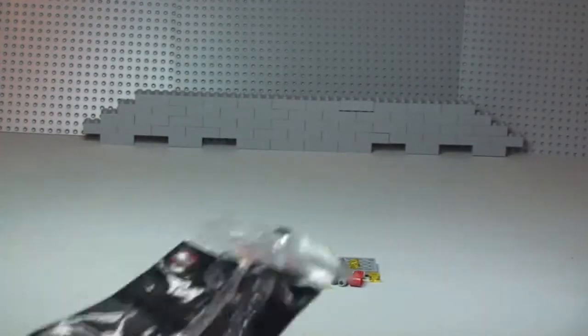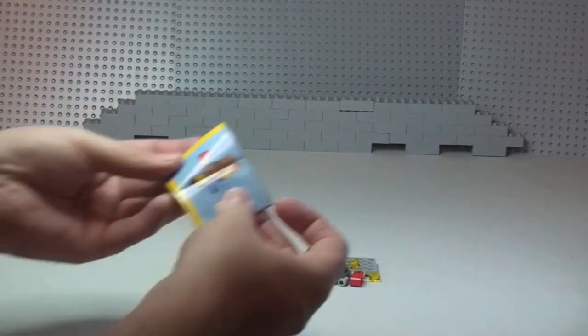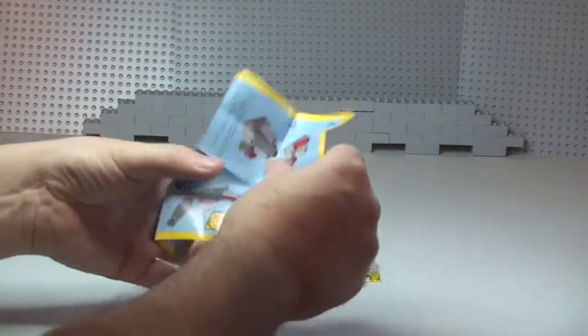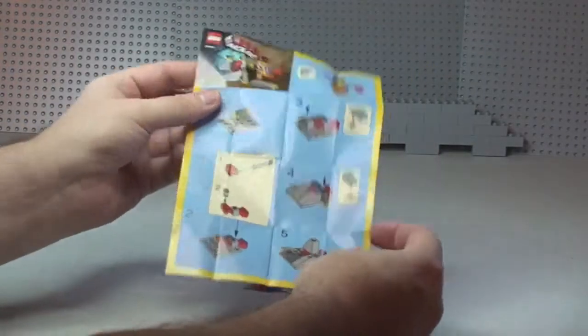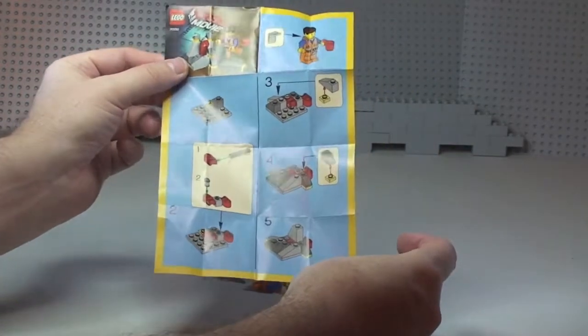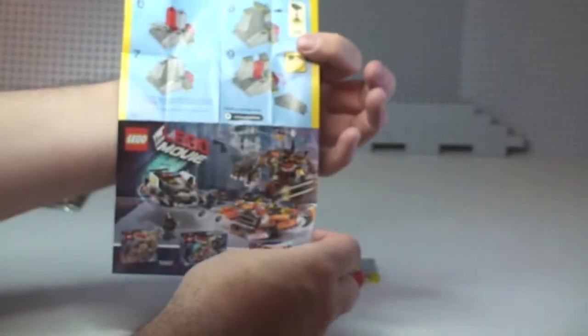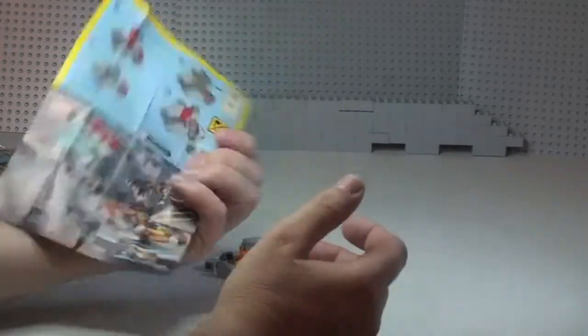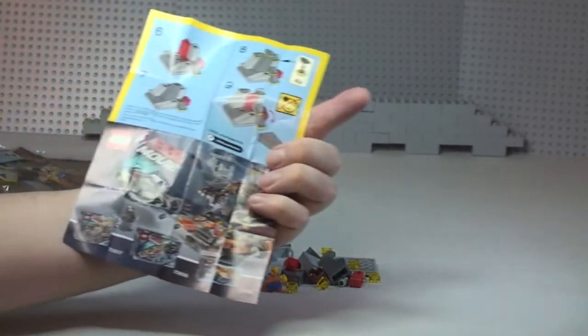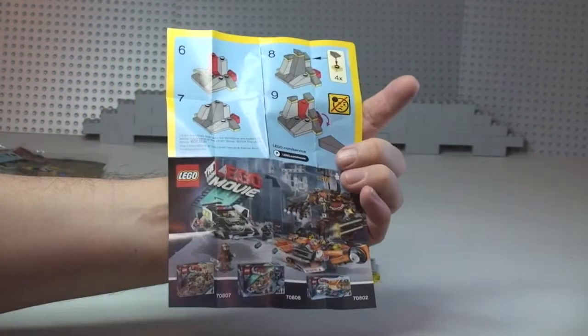Okay guys we can see all the pieces there, not too many pieces and our instruction sheet. Very small instruction sheet actually, so there's only nine main steps with a couple of mini steps during the build. Okay guys so let's get this built.